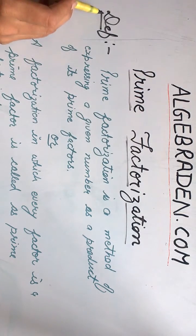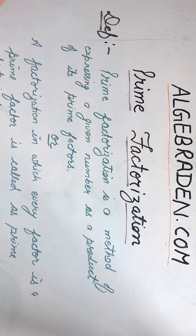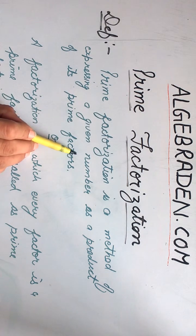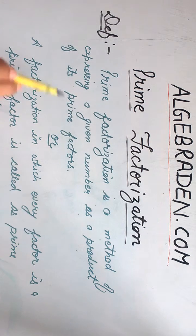Prime factorization. Definition for prime factorization is: prime factorization is a method of expressing a given number as a product of its